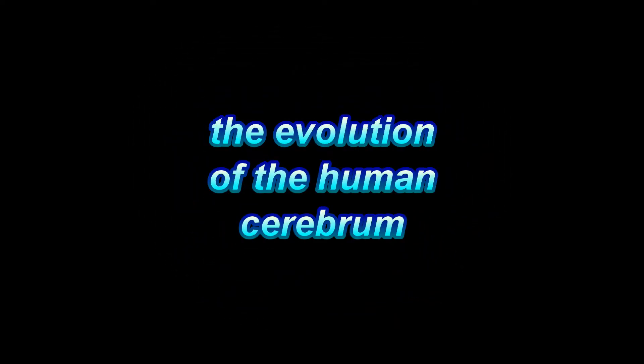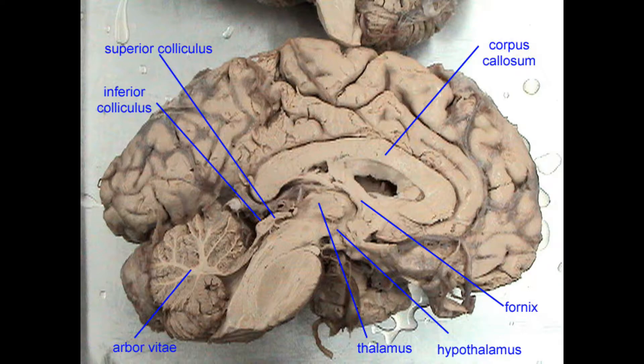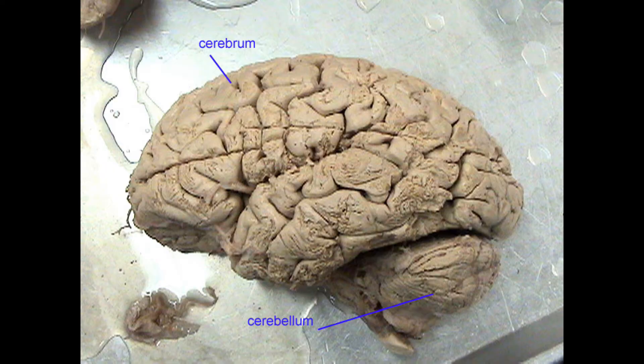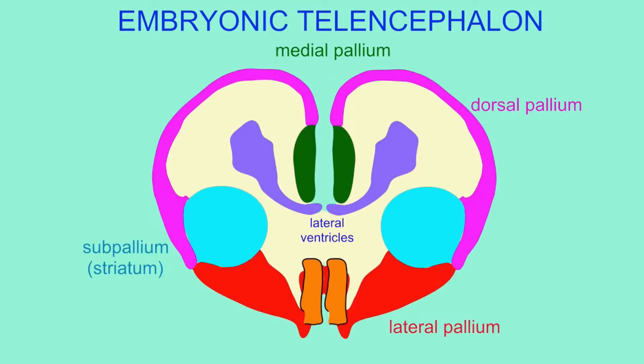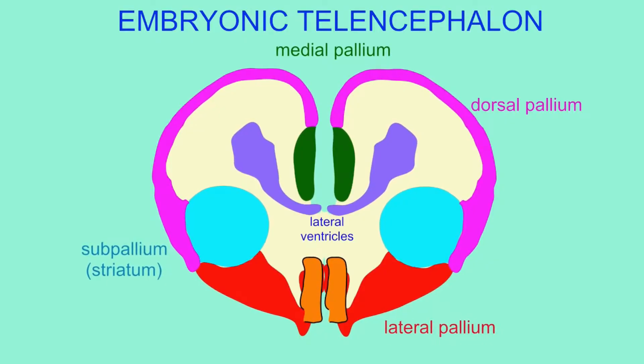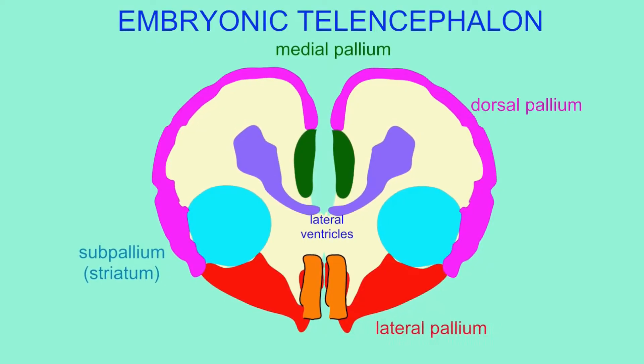The human brain is the most complex structure in the known universe. Its largest region, the cerebrum, or telencephalon, can be subdivided into a number of regions depicted here.